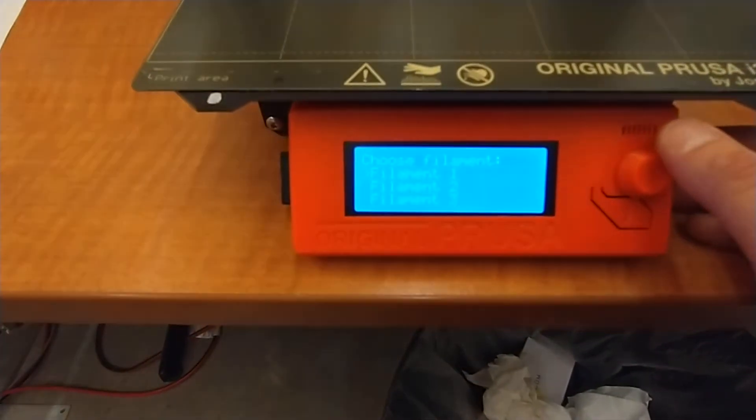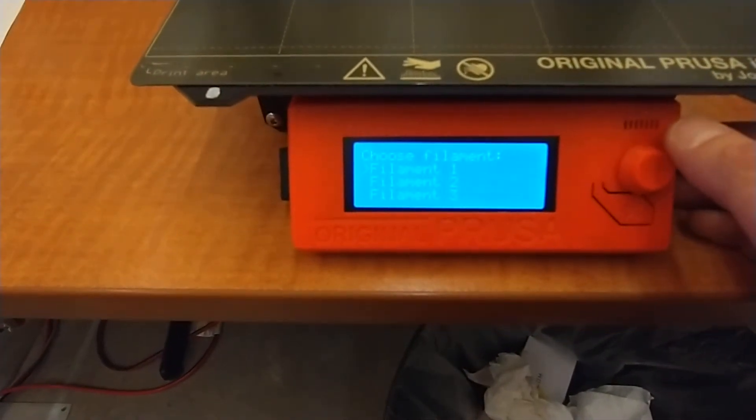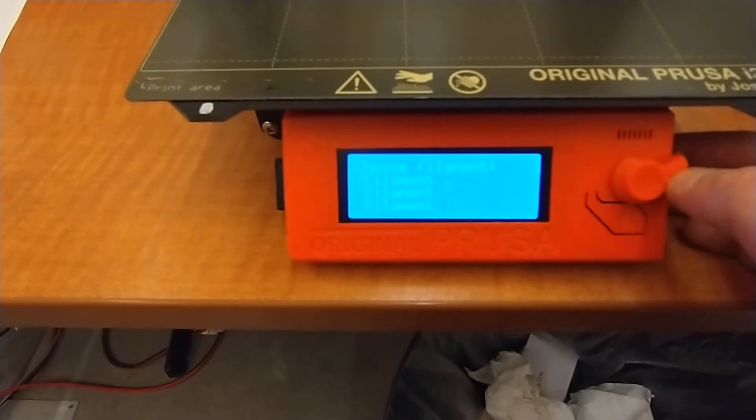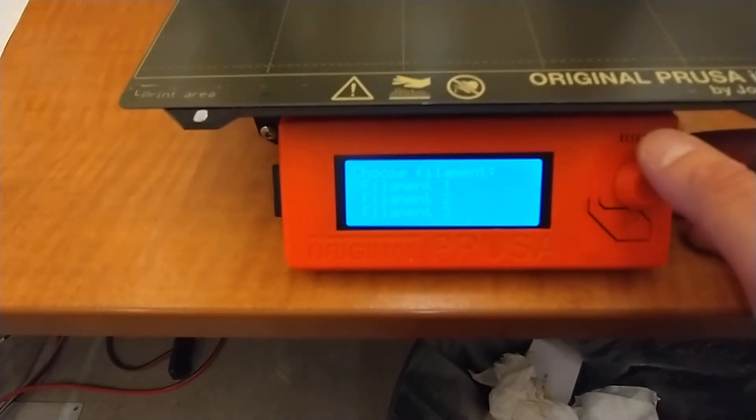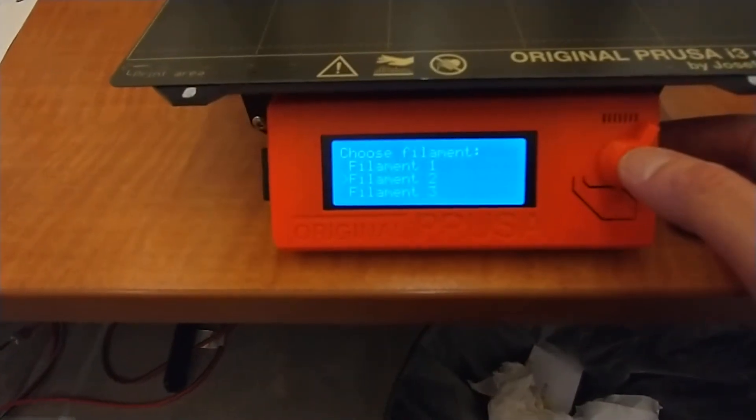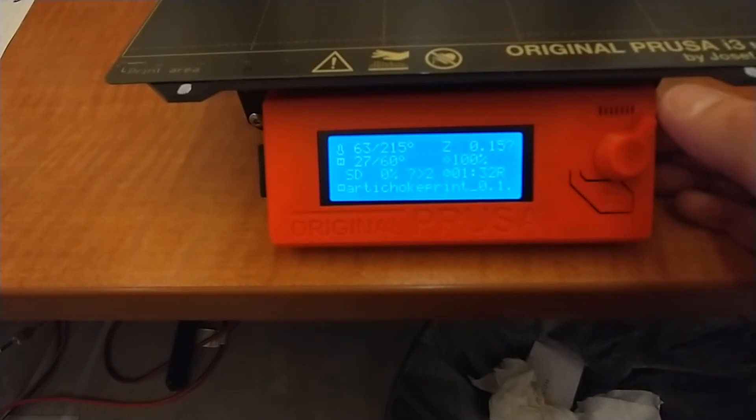Now it's asking me what filament I'd like to print with. Since we're in single mode, I could have loaded any one of those five. But we know we're in filament two. So I just highlight that and select it.